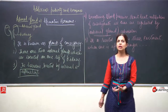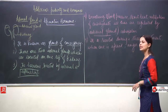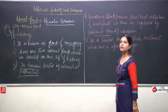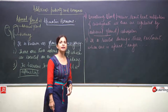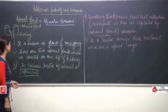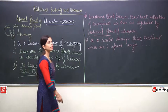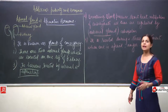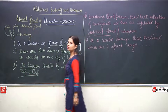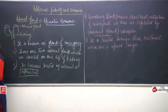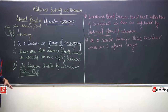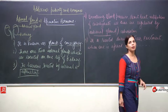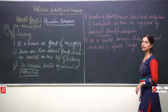The hormone secreted is adrenalin; it is secreted more during emotions like anger, stress, excitement, and when we are afraid or scared. During all such emotions this hormone is secreted in greater amounts. The processes like blood pressure, heart rate, and breathing are all maintained by the adrenal gland. It even helps in the balancing of minerals.